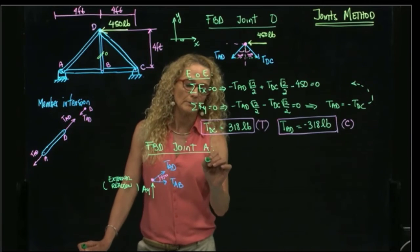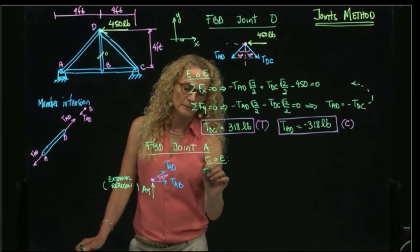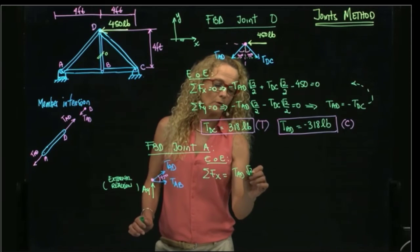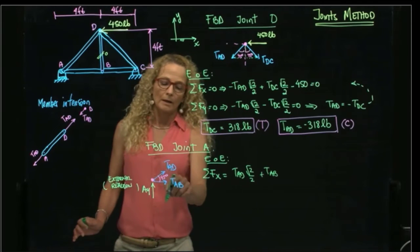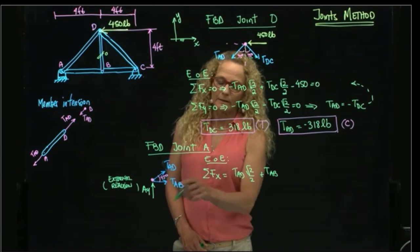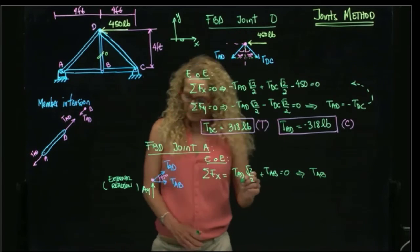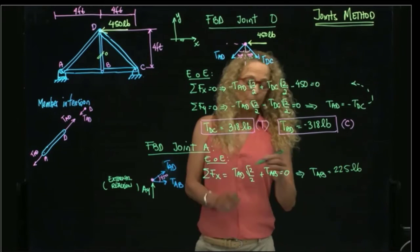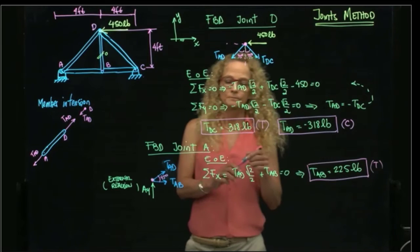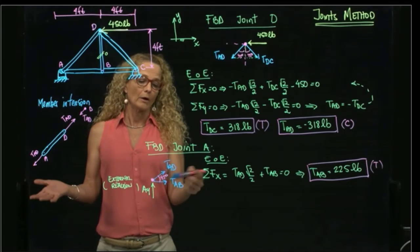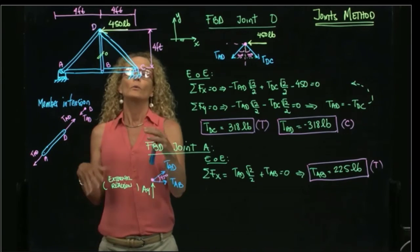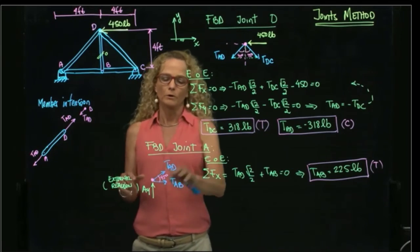Now I can apply my equations of equilibrium. I add forces in X equals to TAD cosine of 45 plus TAB, that is in X direction. And this doesn't contribute to the X axis. So it equals to zero. From here, I can find TAB, 225 pounds. And it's positive, so it's also in tension. Adding forces in Y will allow me to find Ay. But we are not asked to find the forces in the external supports. We are only asked to find the forces in the members. Therefore, I will not add forces in Y.